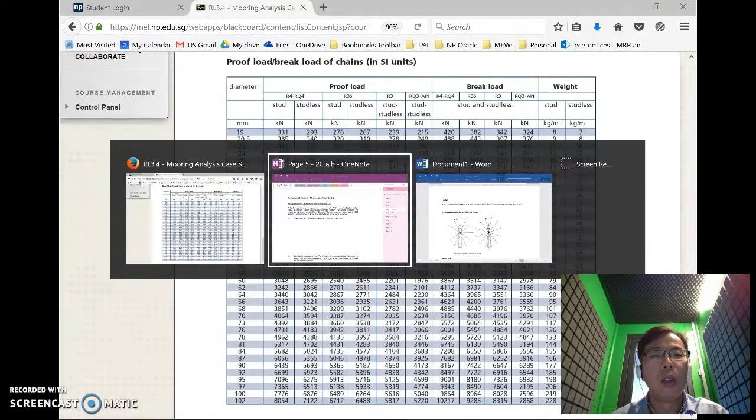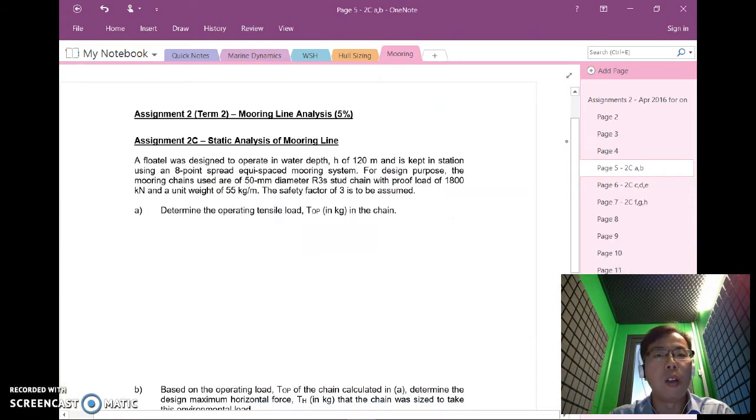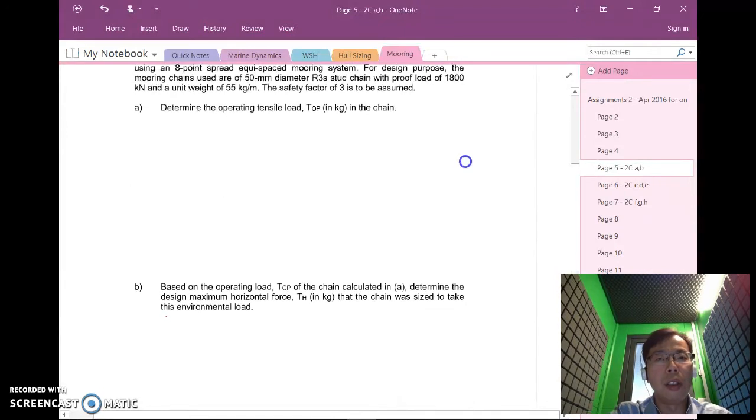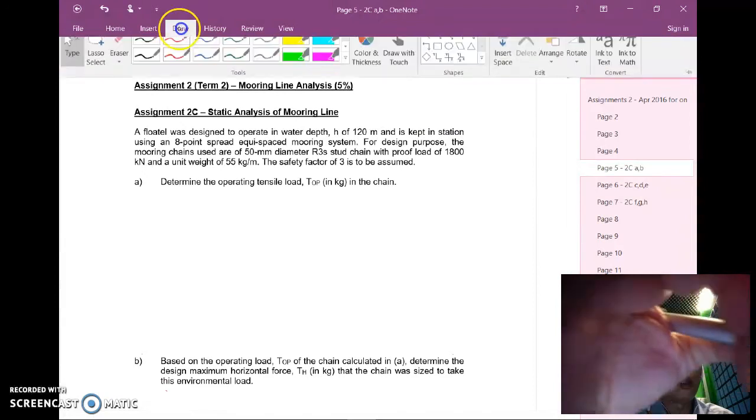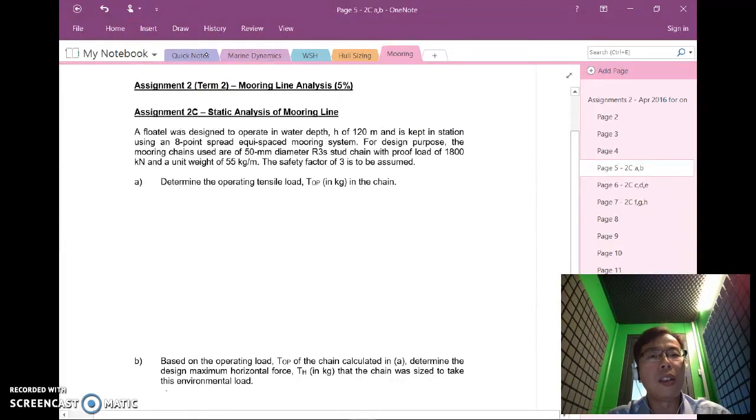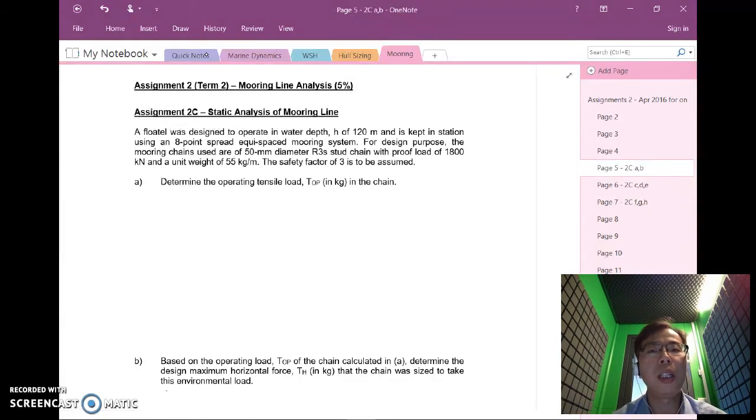Let's look at assignment 2C which is the question for today. Basically we'll be looking at one mooring chain for this exercise. A flotel was designed to operate in the water depth of 120 meters and is kept in station using an 8-point spread equispaced mooring system. For design purpose the mooring chains used are of 50 mm diameter R3S stud chain derived from the anchor manual with a proof load of 1,800 kilonewtons and a unit weight of 55 kilogram per meter. The safety factor of 3 is to be assumed.